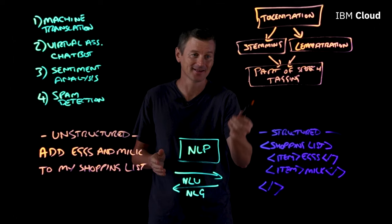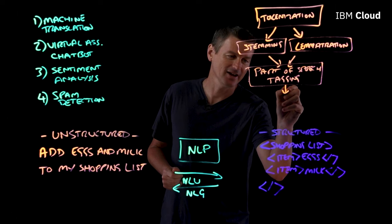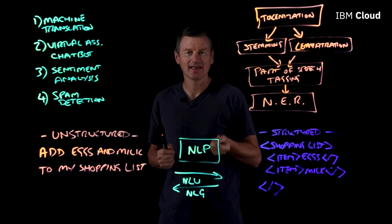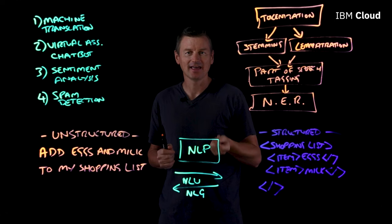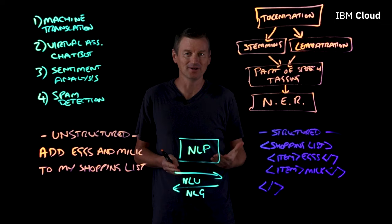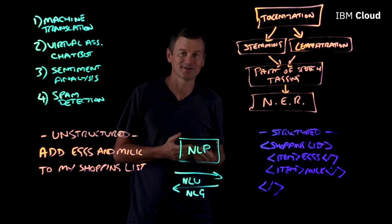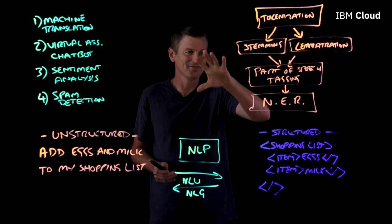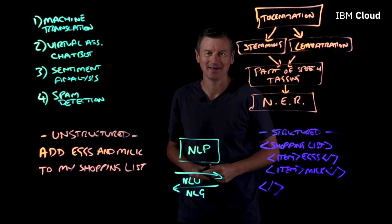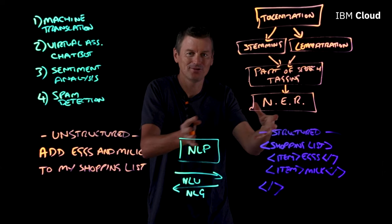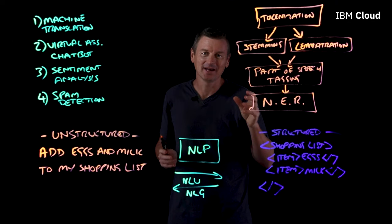And then finally, another stage is named entity recognition. For a given token, this asks whether there is an entity associated with it. For example, a token of "Arizona" has an entity of a US state, whereas a token of "Ralph" has an entity of a person's name. These are some of the tools in this big bag of tools for NLP, in order to get from unstructured human speech through to something structured that a computer can understand. Once we've done that, we can apply that structured data to all sorts of AI applications.